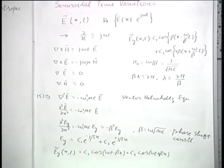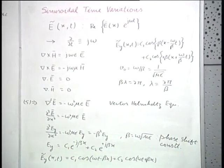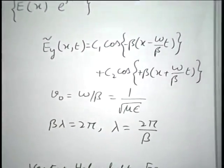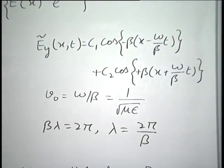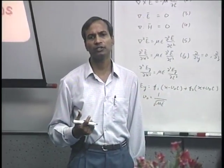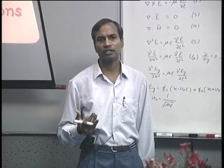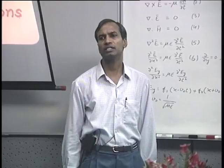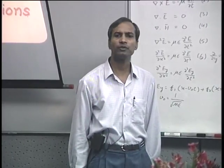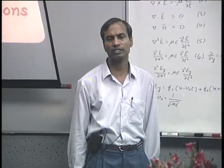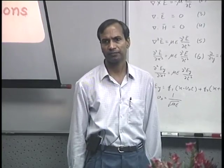If you have any questions on the two topics considered today, we can address those now. In today's lecture, we first considered the properties of uniform plane waves: no longitudinal field components; the electric and magnetic fields related through the intrinsic impedance; and E and H vectors perpendicular to each other and to the direction of propagation. We then considered the important case of sinusoidal time variation and identified the expression for the phase shift constant and the wavelength. We end this lecture here.